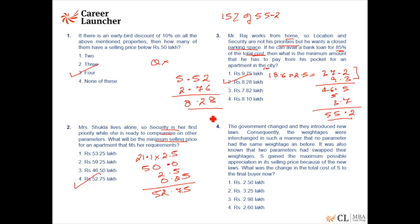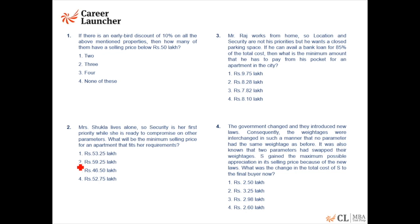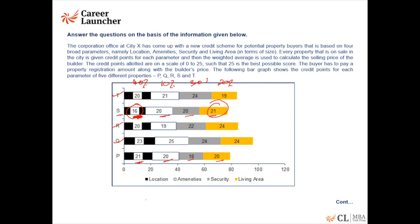With three questions solved — answers 52.75 lakhs, 4 properties, and 8.28 lakhs — now Question 4: the government changed laws and weightages were interchanged such that no parameter had the same weightage as before, and two parameters had swapped. S gained the maximum appreciation in selling price. This means the item for which S had 10% weightage must now become 40%, so location and immunity swap, and security and living area swap.